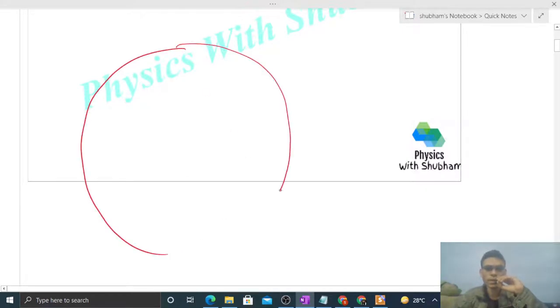So we have the Earth here. Let's say mass of Earth is capital M and radius is capital R. A tunnel is made along the diameter of the Earth. This is the center of Earth. At some height h, we have a particle with mass small m, and we drop it.